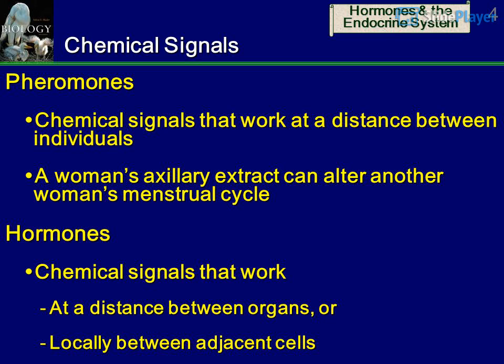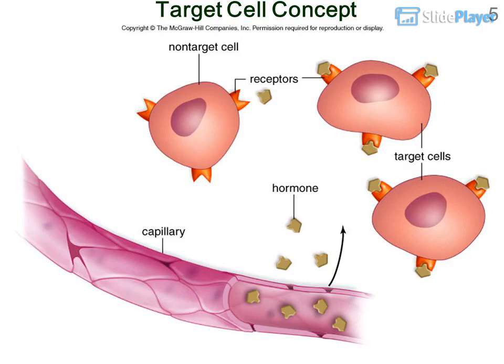Chemical Signals: Pheromones are chemical signals that work at a distance between individuals. For example, a woman's axillary extract can alter another woman's menstrual cycle. Hormones are chemical signals that work at a distance between organs, or locally between adjacent cells — this is the Target Cell Concept.